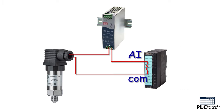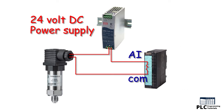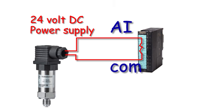Transmitters typically require a 24V DC supply. This supply can be derived locally at the transmitter or supplied directly from the associated control panel.